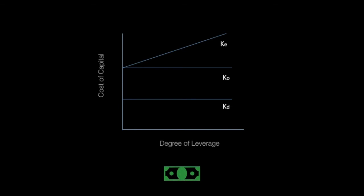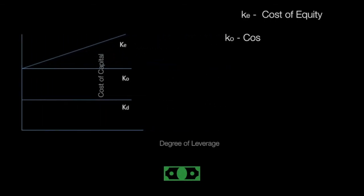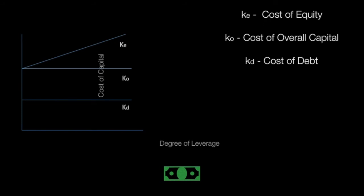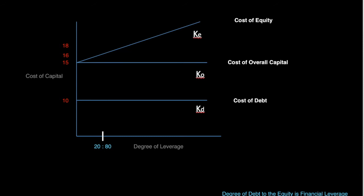Here we can see that the x-axis has the degree of leverage and the y-axis has the cost of capital. The split is basically that KE represents the cost of equity, KO represents the cost of overall capital, and KD represents the cost of debt. We can see the white point given here — in this case, with debt at a 20 to 80 ratio at 10%, the cost of equity starts at 15%. If debt is at 10%, the cost of equity would automatically rise to 16%. The use of debt to equity is known as financial leverage.